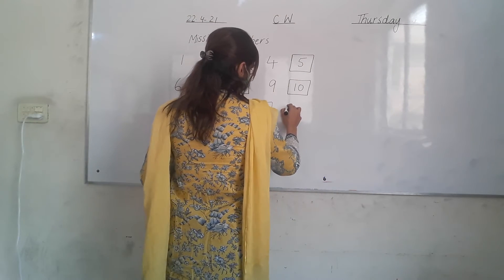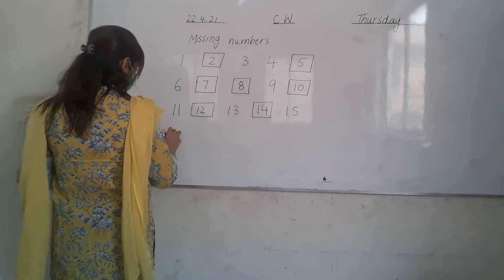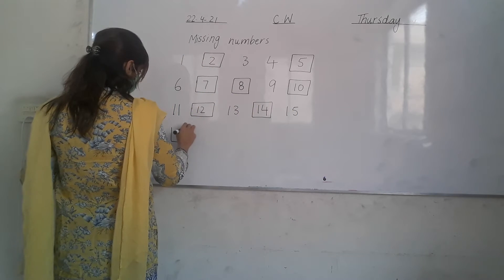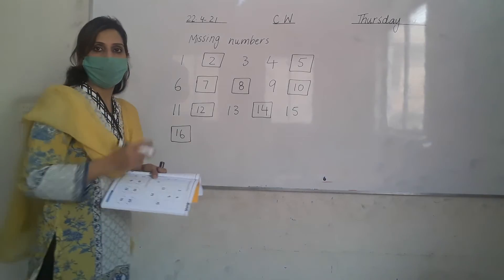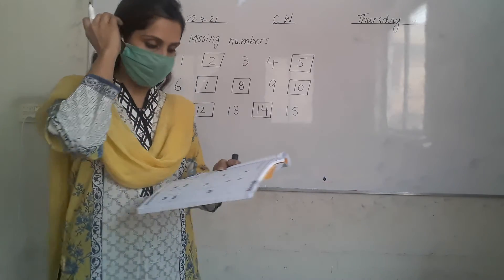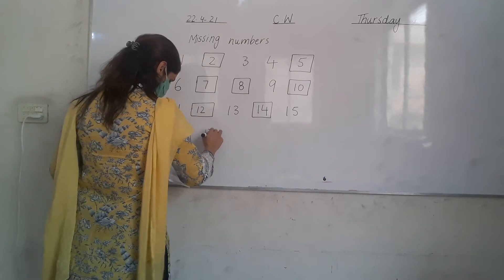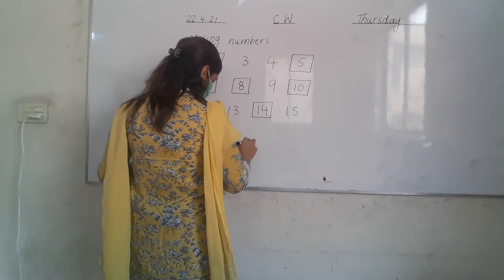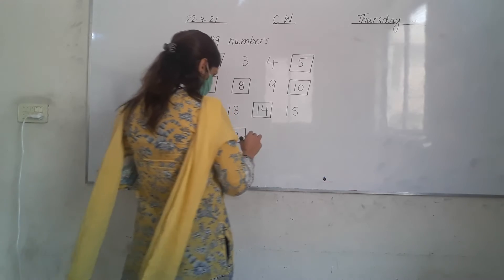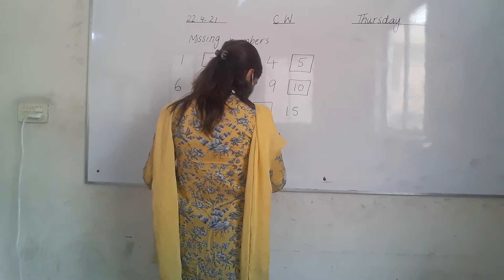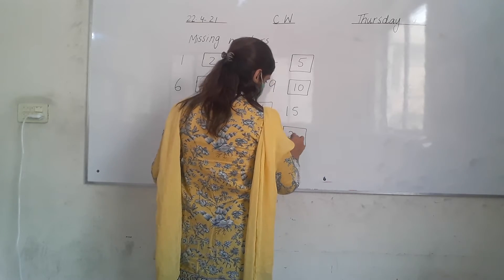15. What comes after 15? 16. One 6. 16. 17. 18. 19. And then the last one is 20.